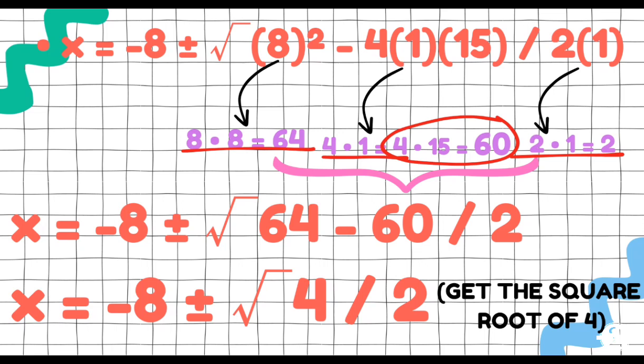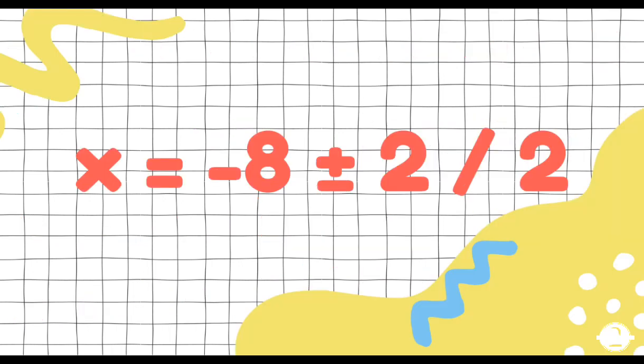Tulad ng kanina, unahin mo kung ano ang nasa radical. Subtract the 64 minus 60. So ang magiging answer is 4 over 2. Tapos after that, get the square root of 4. So ang magiging answer is x equals negative 8 plus or minus 2 over 2.